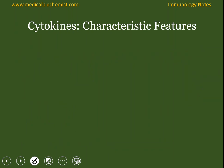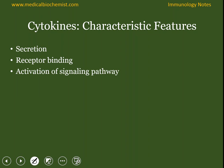What are the characteristic features of cytokines? It is secreted by specific secreting cells. It has one specific receptor on the target cell where it binds. Once the cytokine comes in contact with the receptor, it activates the signaling pathway. And once the signaling pathway is activated, it induces the cellular response that ultimately leads to its biological function.